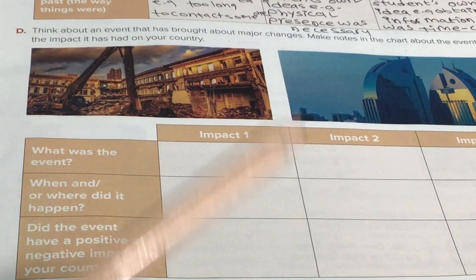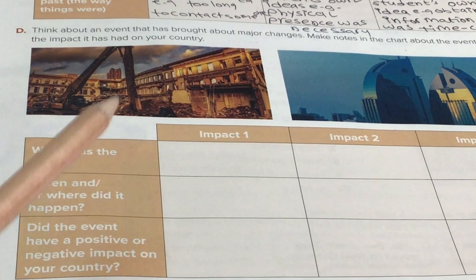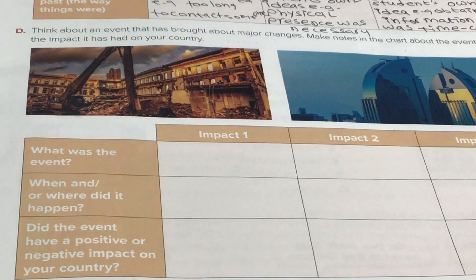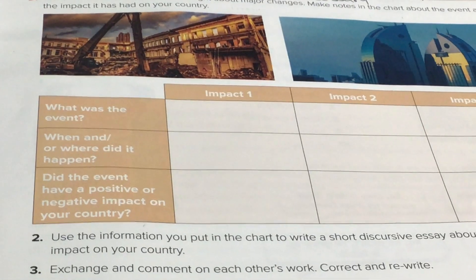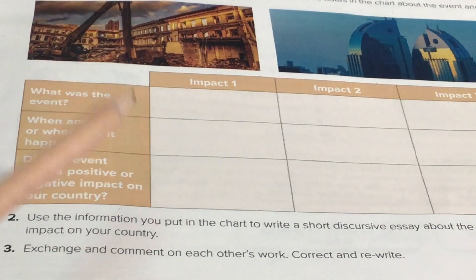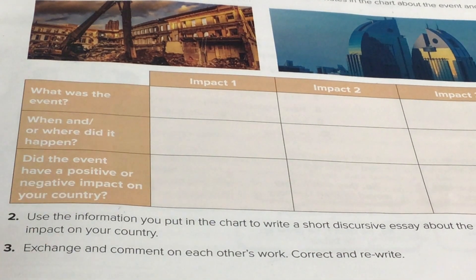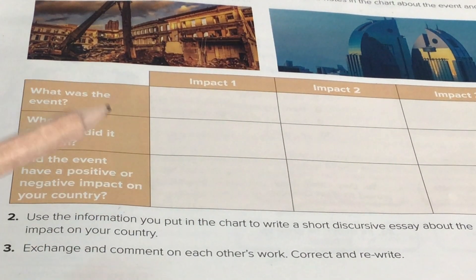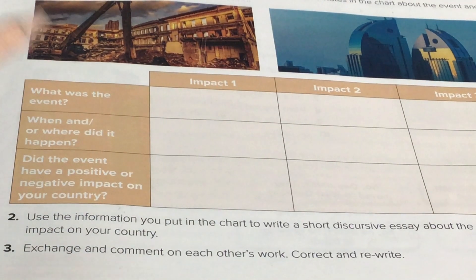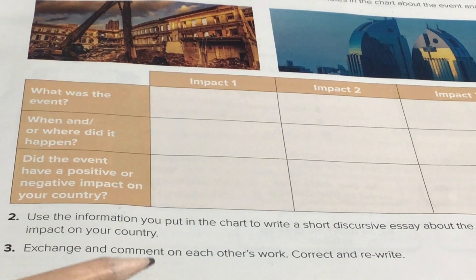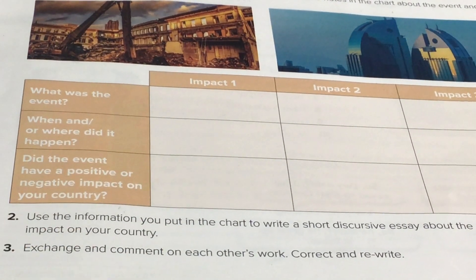What was the event - اكتب الأحداث. When and where did it happen - أين وأين حصلت هذه الأحداث؟ Did the events have a positive or negative impact on your country - هل كانت هذه الأحداث سلبية أو إيجابية في بلدك؟ Use the information you put in the chart to write a short discursive essay about the impact on your country - اكتب نصاً يُظهر الإيجابيات والسلبيات. Exchange and comment on each other's work - تبادل العمل وشاركه مع زميلك.